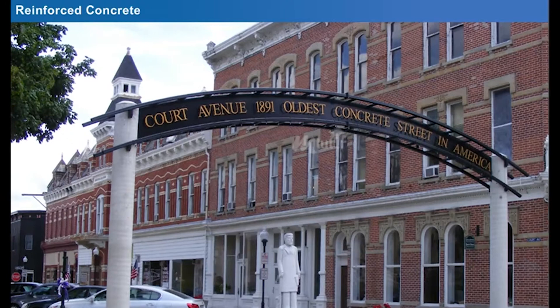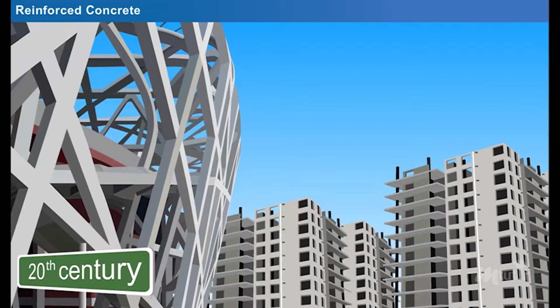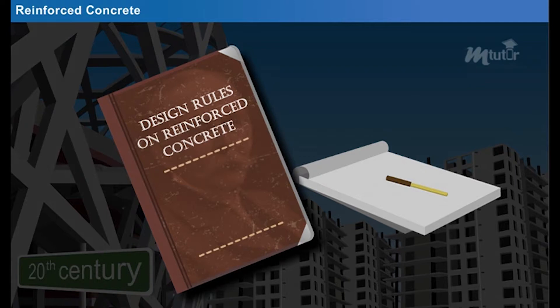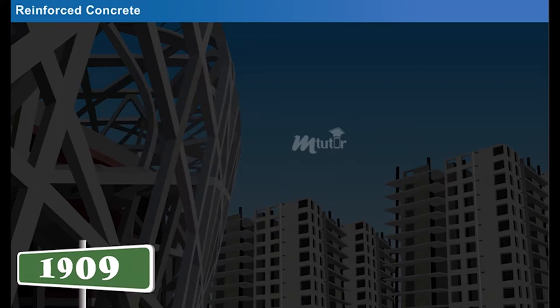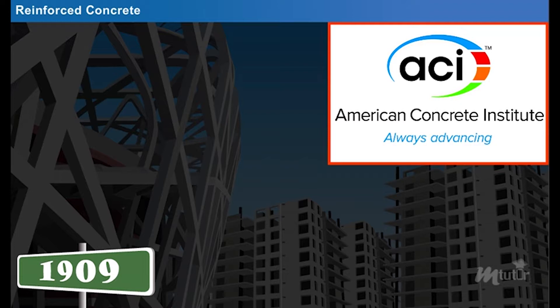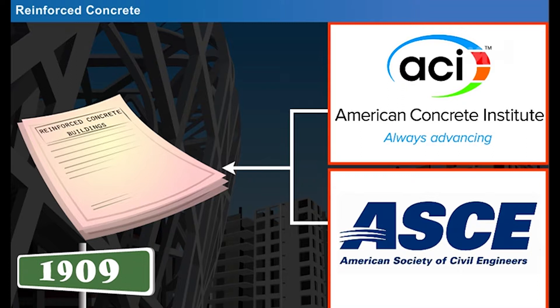The early 20th century witnessed significant improvements in the development and use of reinforced concrete. It started with the design rules proposed by the French Commission on Reinforced Concrete. Later, in 1909, professional societies like the American Concrete Institute and the American Society of Civil Engineers introduced the first joint code for reinforced concrete.